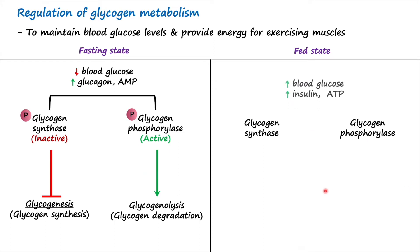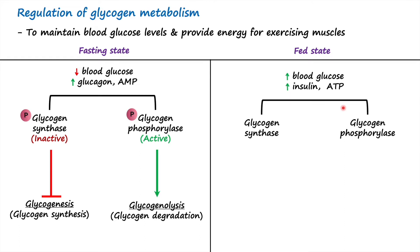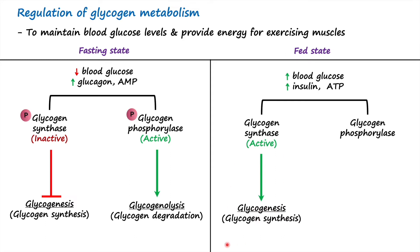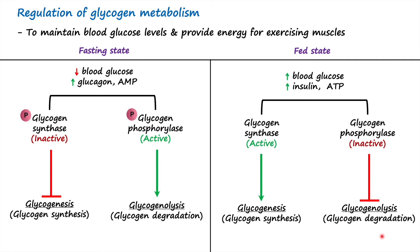During the fed state, there is an increase in blood glucose level, which results in an increase in insulin hormone, as well as an increase in ATP levels — an indicator of an energy-rich status of the cells. During the fed state, both glycogen synthase and glycogen phosphorylase are dephosphorylated. When glycogen synthase is dephosphorylated it is active and glycogenesis is upregulated, whereas when glycogen phosphorylase is dephosphorylated it is inactive and glycogenolysis is inhibited.